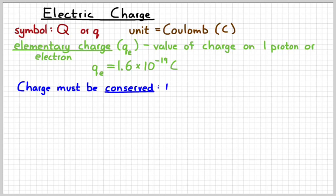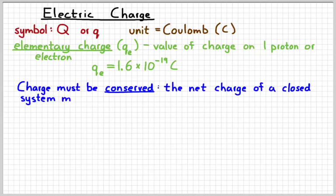One important thing about charge is that it has to be conserved. The net charge of a closed system has to remain constant. So mass is conserved, charge is similar to mass, charge is conserved as well. Now, don't say that charge can't be created or destroyed. What the conservation law really tells us is that the net charge of a system remains constant. We'll discuss that in more detail later on.